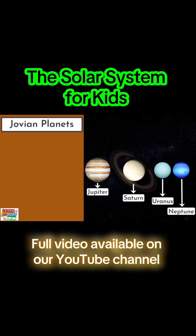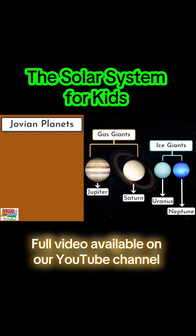More specifically, Jupiter and Saturn are the gas giants and Uranus and Neptune are the ice giants in our solar system.